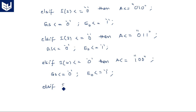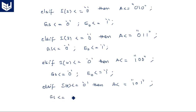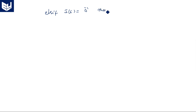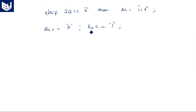Elsif I(5) = '0' then A is assigned with "101", GS is equal to '0', and E0 is equal to '1'. Elsif I(6) = '0' then A is assigned with "110", GS is equal to '0', and E0 is equal to '1'.